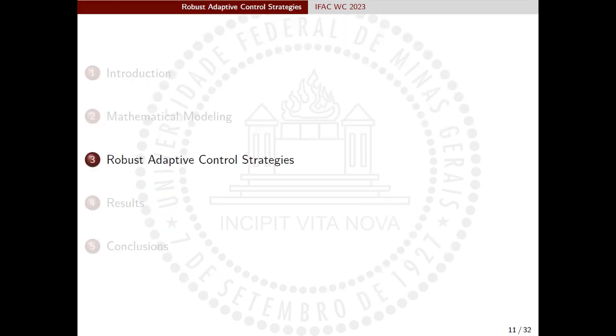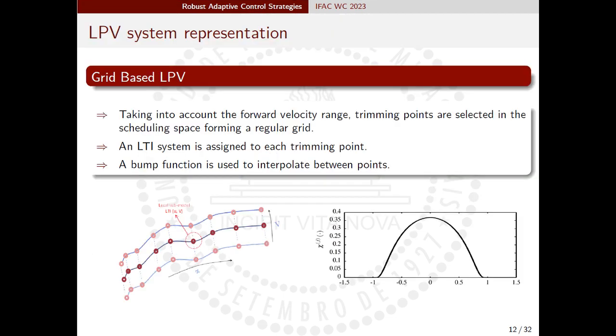Once we have the non-linear model we can introduce the control strategy developed in this work. The proposed robust adaptive mixing controller mixes candidate controllers based on the quad-CP VTOL UAV forward motion. Taking into account the forward velocity range, trimming points are selected in the scheduling space forming a regular grid. Then, LTI systems are assigned to each trimming point and a bump function is used to interpolate between them thus deriving an LPV model that fully represents the non-linear one.